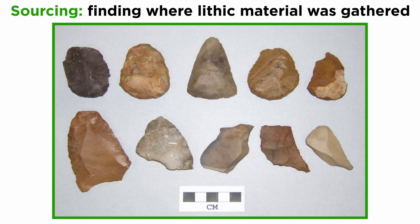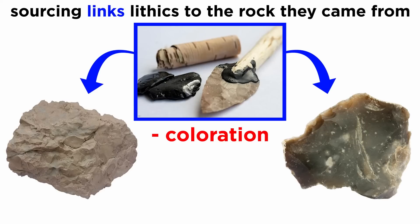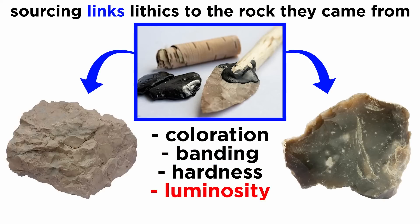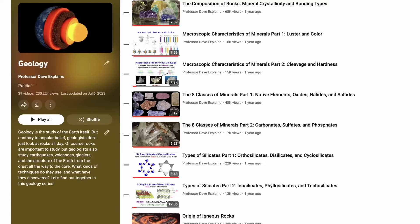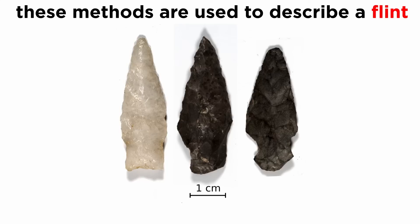While this descriptive analysis only works for points, another type of analysis — sourcing — can be done for all lithics. Sourcing is done by finding where the material from a lithic artifact was gathered, and can help us understand material exchange in the prehistoric world. By describing exact coloration, banding, hardness, luminosity, molecular composition, and several other factors, we can often find what outcropping a piece of obsidian, chert, or flint came from. Some flints are more suited to being napped, and thus were widely distributed. Check the geology series to review many methods of identifying minerals — these same methods are used but with greater precision to describe a flint, and then the flint is compared with an inventory of raw flints to find where it originated.